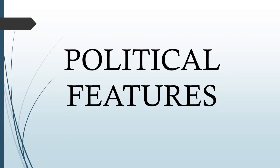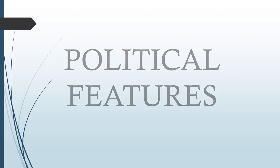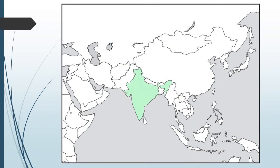First up, we have the political features. The first country is India. It's located in the southern part of Asia. Its lower half is surrounded by water, and its capital is New Delhi.